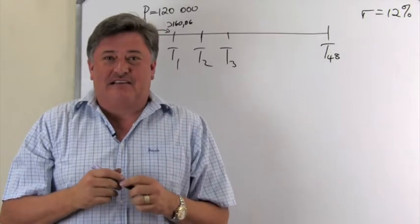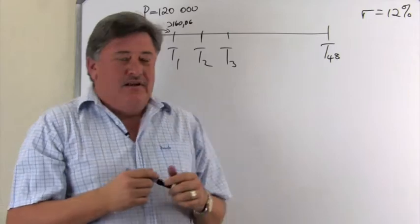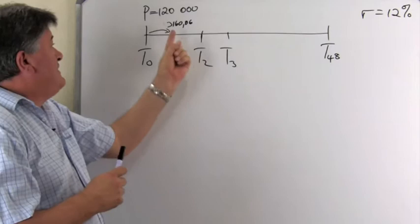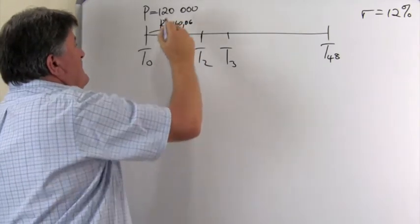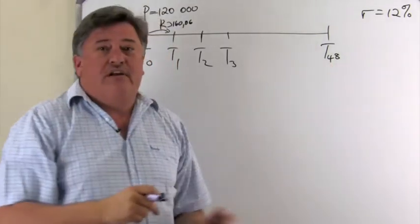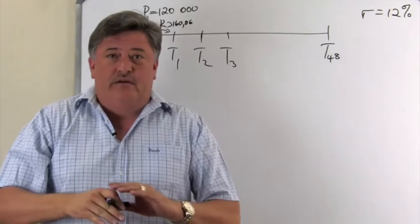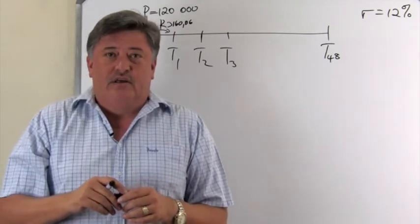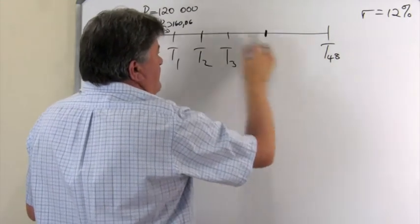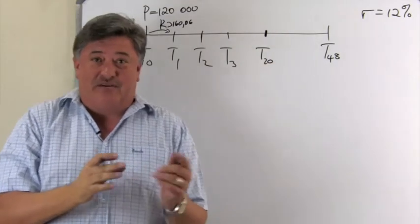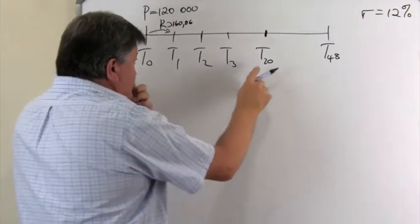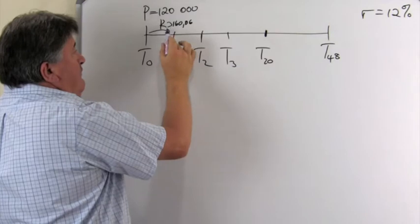In the A part, they ask us to find the monthly payment. Now as you can see, I've put that monthly payment now on our timeline and that is the 3,160 rand and 6 cents. Now she's going to make these payments over a period of four years. Then the loan is paid off. But let's say T20. It doesn't really now look nice on our timeline because it doesn't look like it fits there. But just for argument's sake, let's just say T20 is over here.